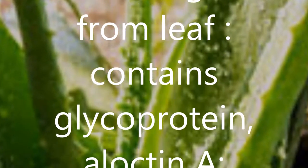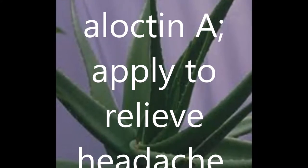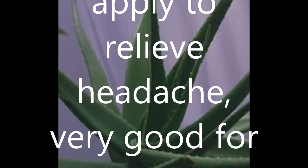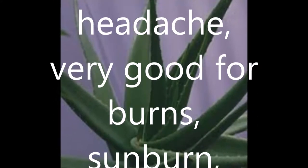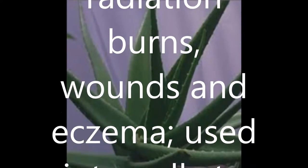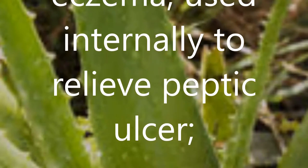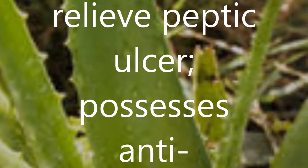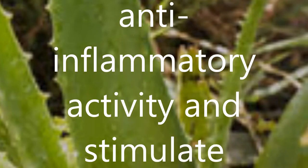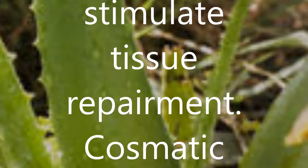Medicinal uses: yellow juice from leaf skin, boiled gently to dry, used in traditional recipes as a purgative. Fresh mucilage from the leaf contains glycoprotein and aloctin, applied to relieve headache. Very good for burns, sunburn, radiation burns, wounds, and eczema.